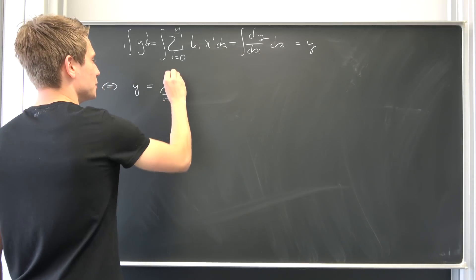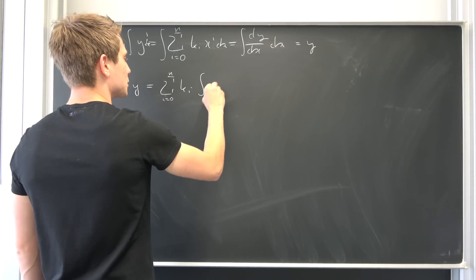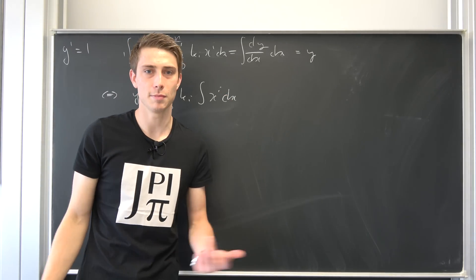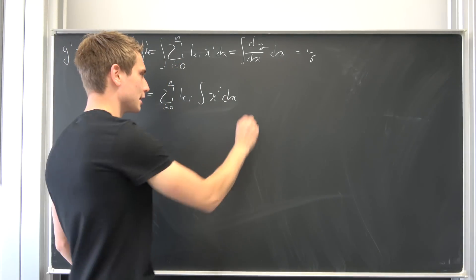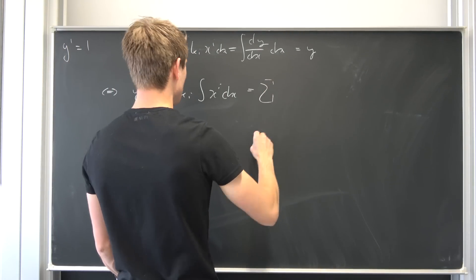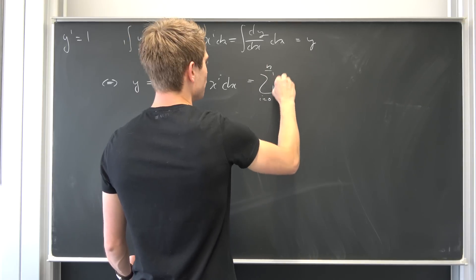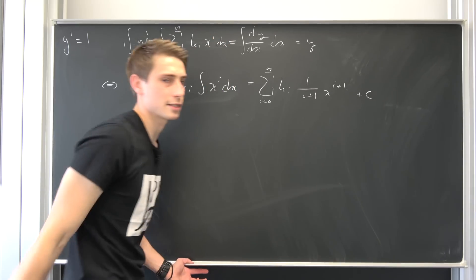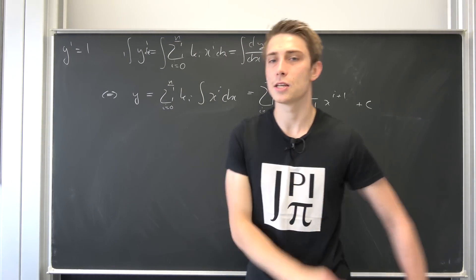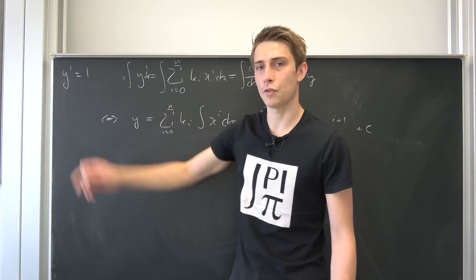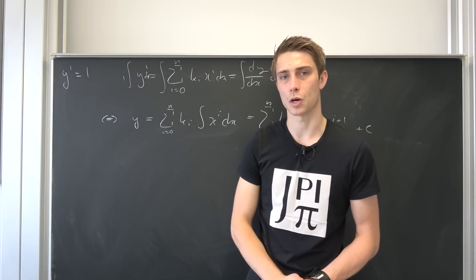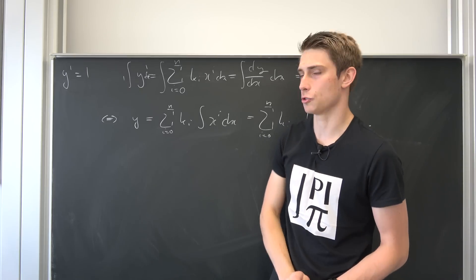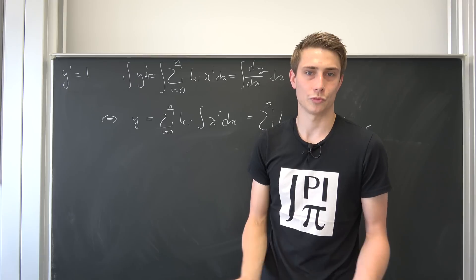We can bring k_i to the outside, so we are going to end up with y being equal to this finite sum: k_i times the integral of x to the i dx. This thing right here is just an index, not an imaginary unit, so we can integrate it quite easily. We end up with the sum from i equals 0 to n of k_i times (1 over i plus 1) times x to the i plus 1, plus some arbitrary constant c. And then we are done — you get to this differential equation by just setting your coefficients, reducing the sum to n equals 0.